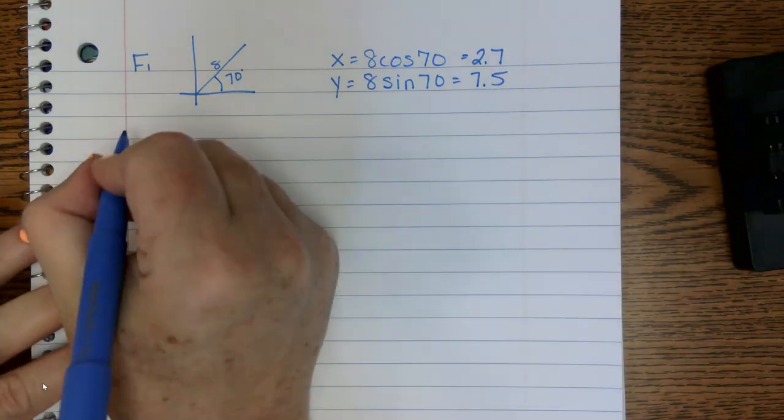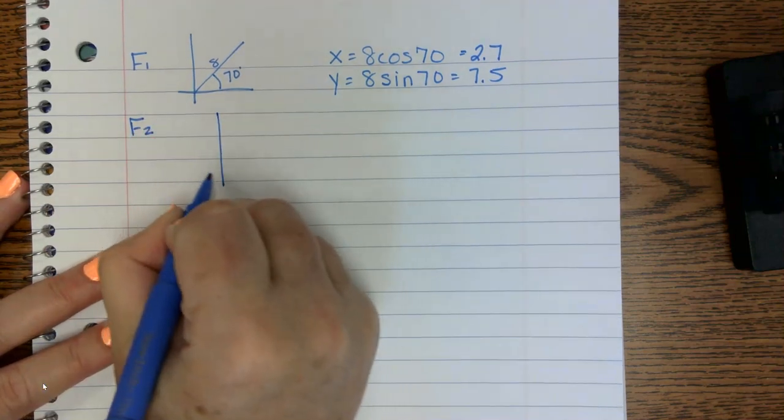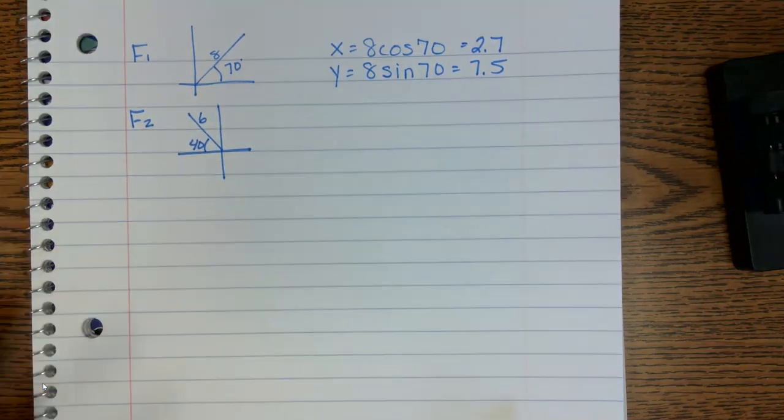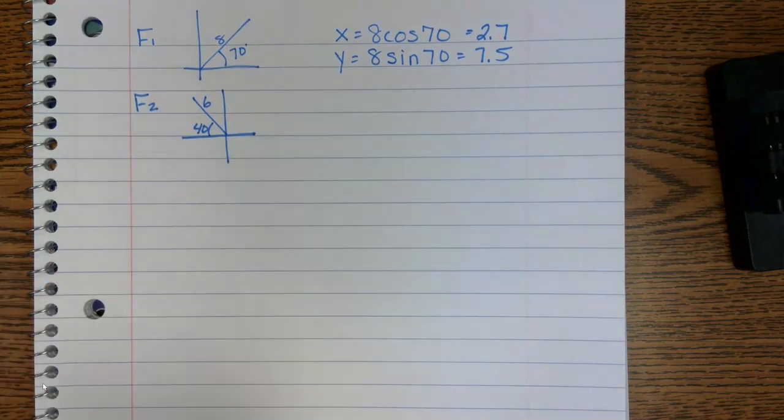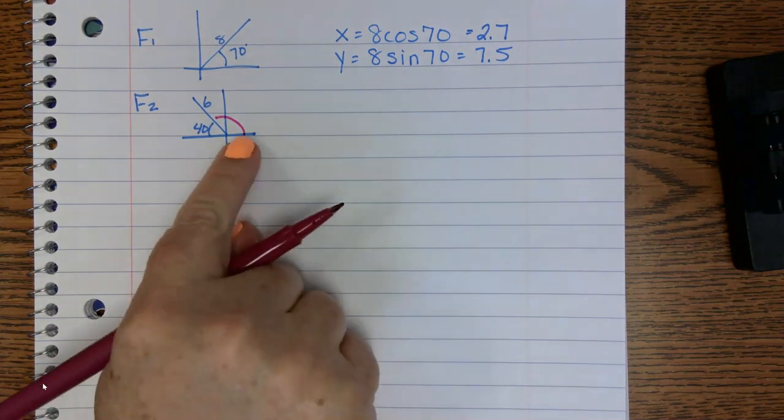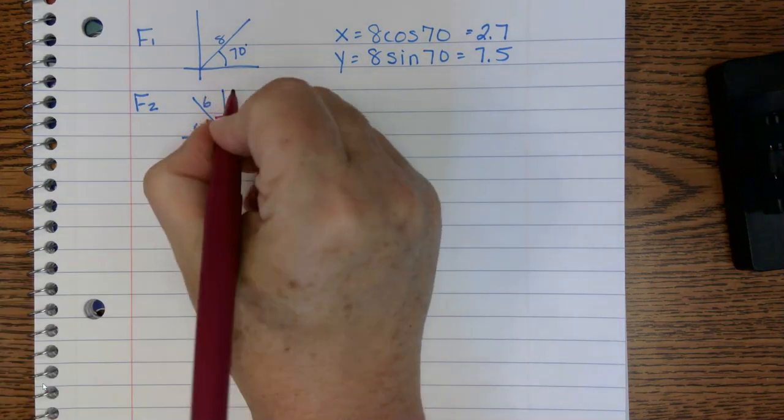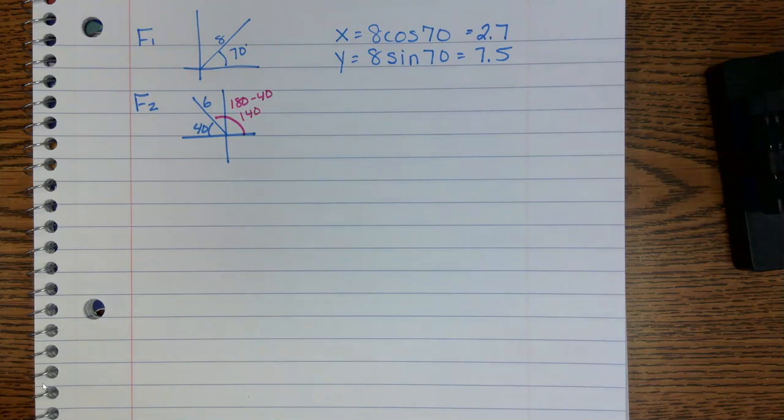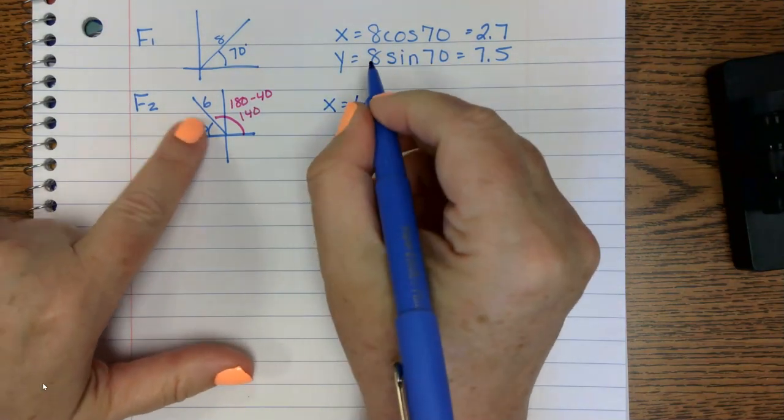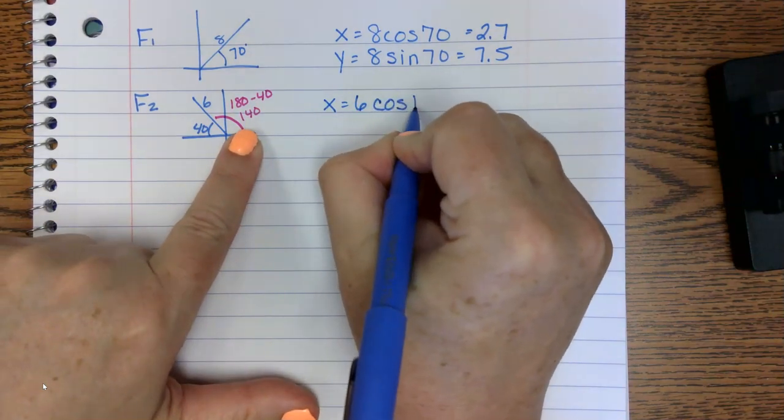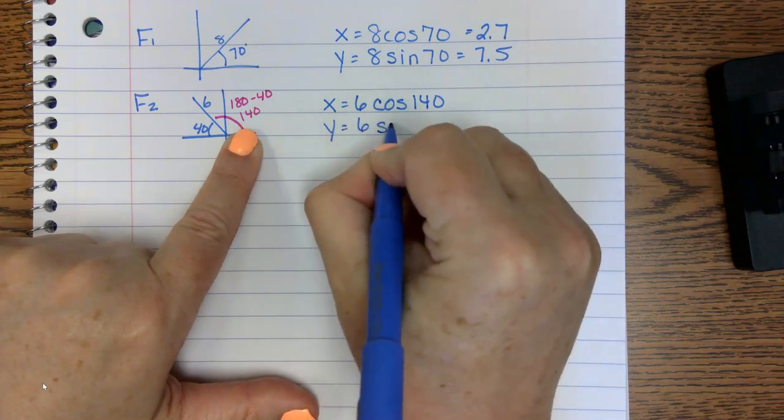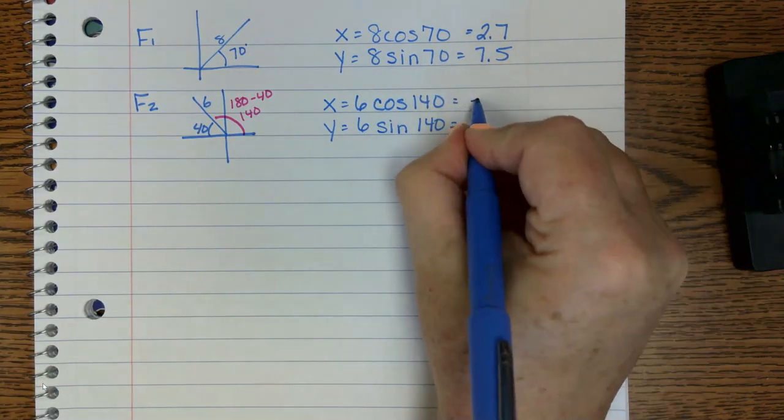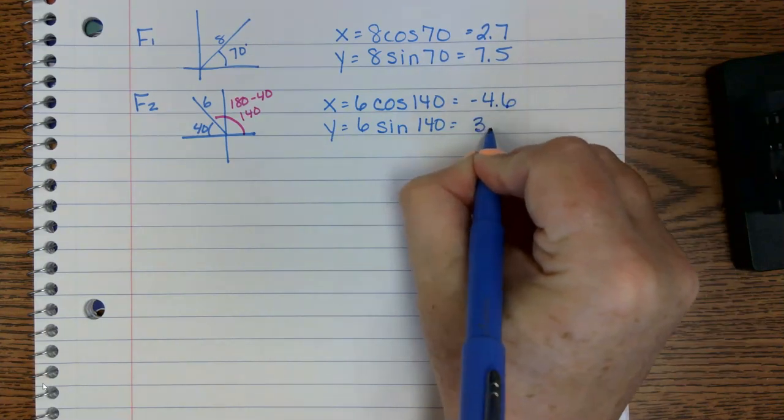Now we're going to repeat for force 2. So here is where we've got to make sure we get that right and correct angle. So we've got to go from here. Notice I'm short. So 180 minus 40. So it's going to be 140 degrees. So now we're going to do x equals 6 cosine of 140 and y equals 6 sine 140. Put this in the calculator. I get negative 4.6 and 3.9.